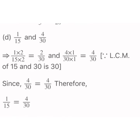The last pair in this question is 1 by 15 and 4 by 30. After finding the LCM of 15 and 30, we get 30 as the LCM. We multiply 1 upon 15 — both numerator and denominator — by 2 to get 2 by 30. For 4 by 30, we multiply by 1 to get 4 by 30. Since 2 by 30 does not equal 4 by 30, we check: actually 1 by 15 is equivalent to 2 by 30, but not to 4 by 30. Wait — the result shows 2 by 30, confirming that 1 by 15 is equivalent to 2 by 30.